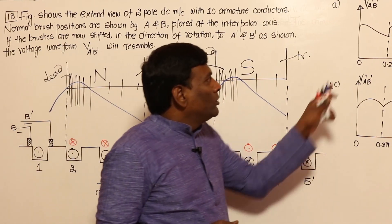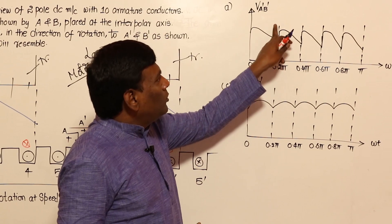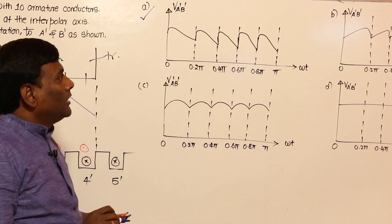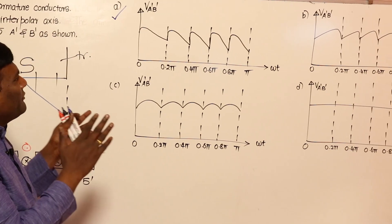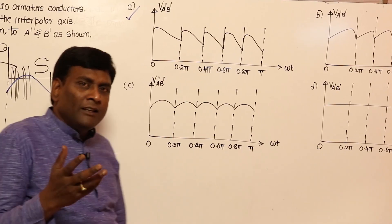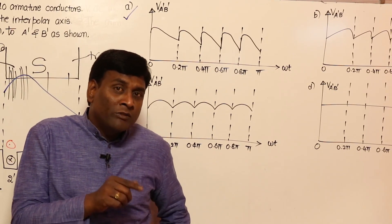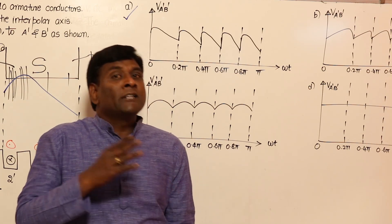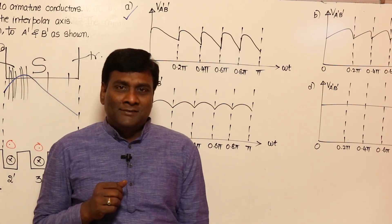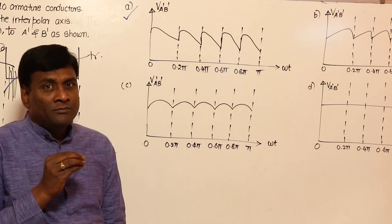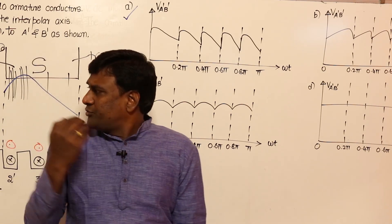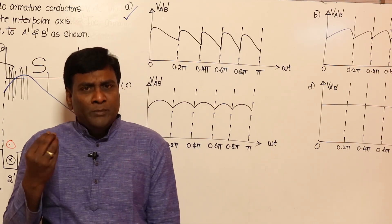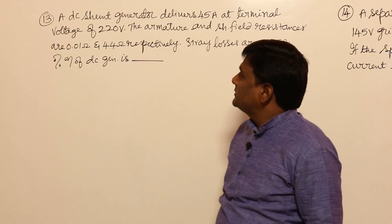So in the options, depending on the flux density, voltages will vary - more here, less here - so option A should be right. Please analyze: if it's a generator shifted in the direction of rotation, what happens? Against direction of rotation, what happens? In a motor shifted in the direction of rotation, what happens? It's actually a simple question - people are confused only because of the length of the question.